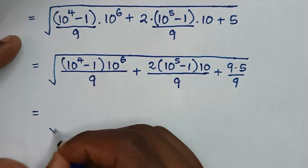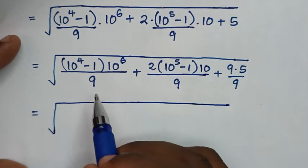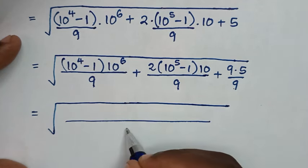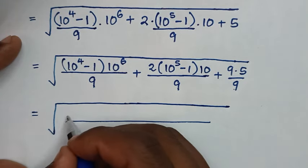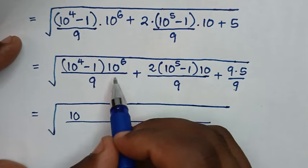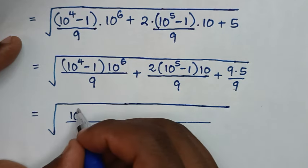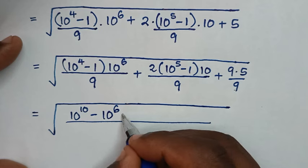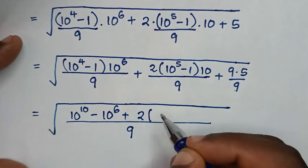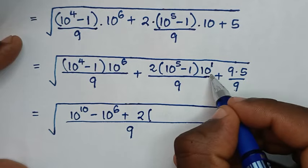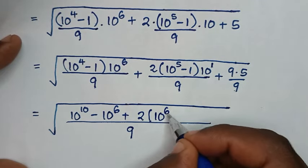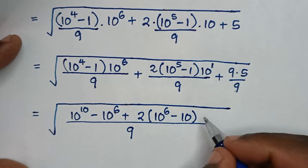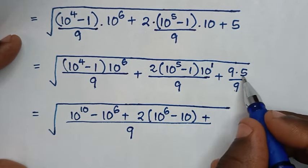Then in the next step, it will be equal to square root of — here the LCM is 9, because we are adding this plus this plus this. So here the LCM will be 9. So it will be: 10 power of 10 minus 10 power of 6, then plus 2 times 10 power of 6, then minus 2 times 10 which is 20, then plus 9 times 5 which is 45. The common LCM is this 9.